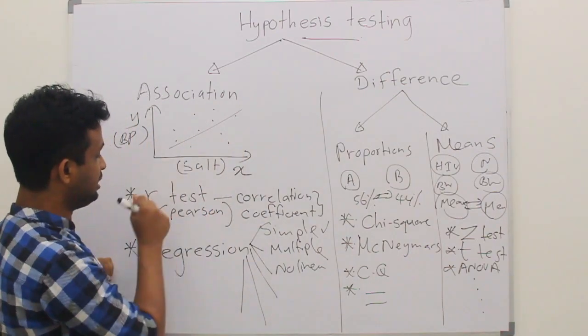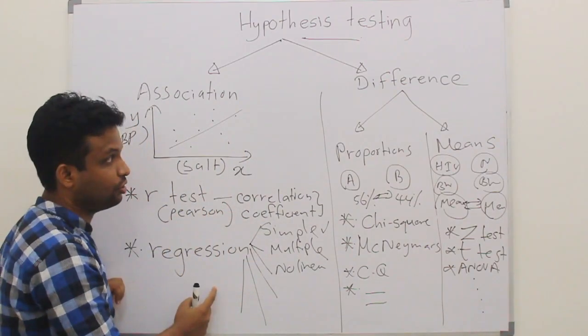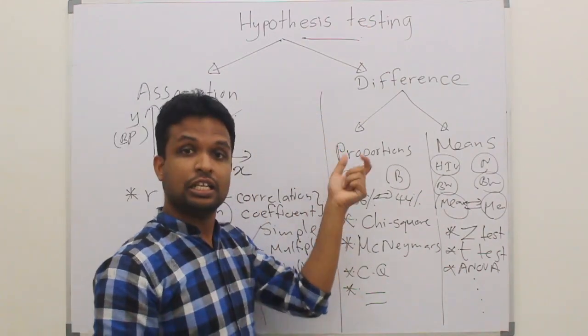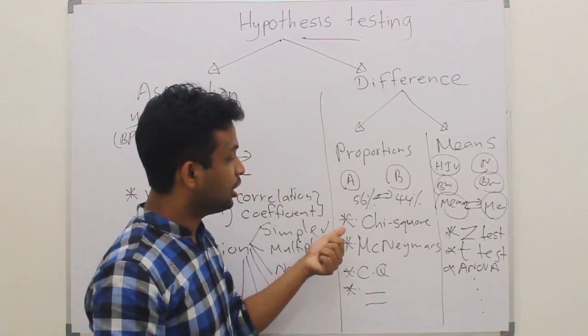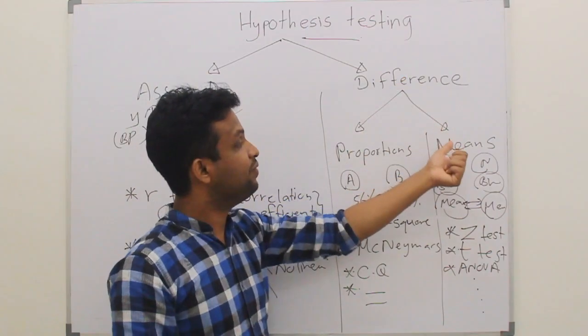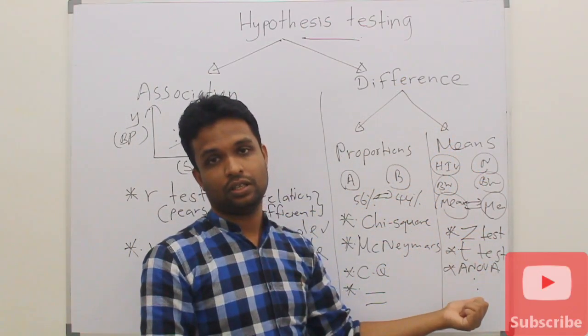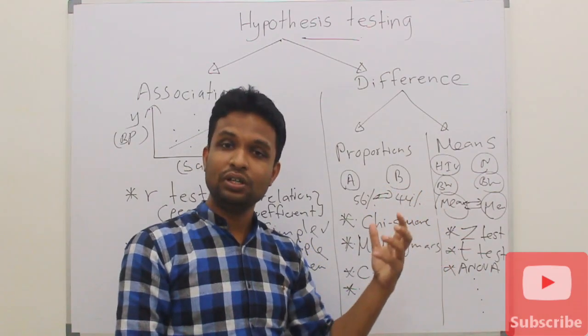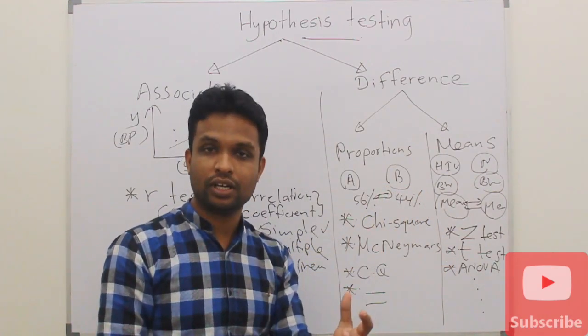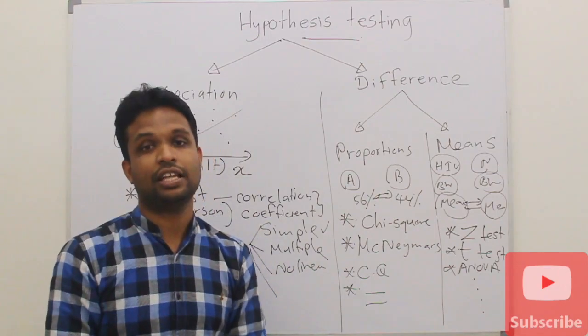I hope you are clear about the different statistical tests that we can apply for hypothesis testing. For associations, R-test and regression; for difference, especially for proportions, chi-square test; and for means, we have Z-test, T-test and ANOVA. We will be discussing all these tests one by one in the next few lectures. Thank you very much.